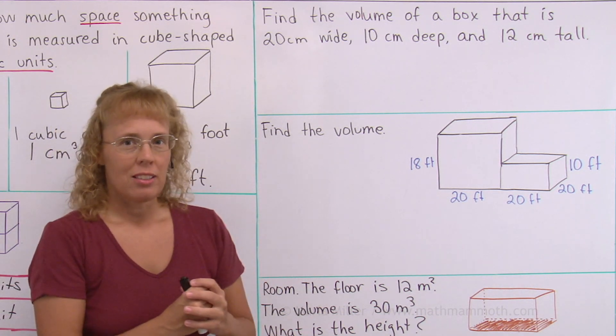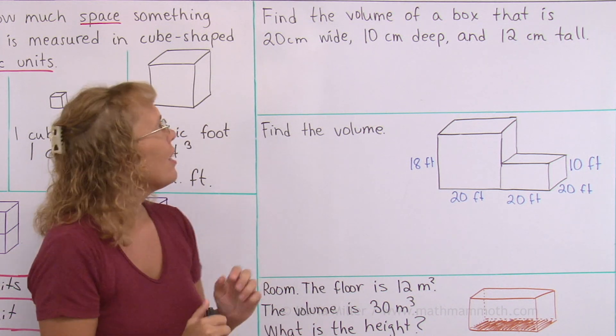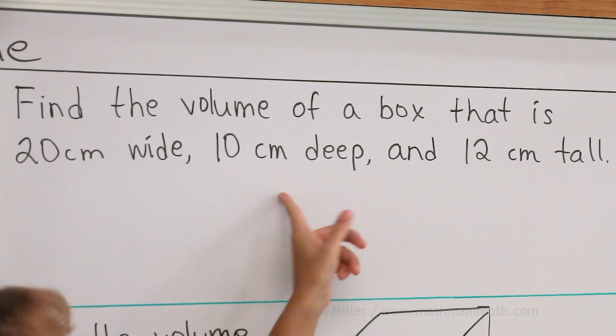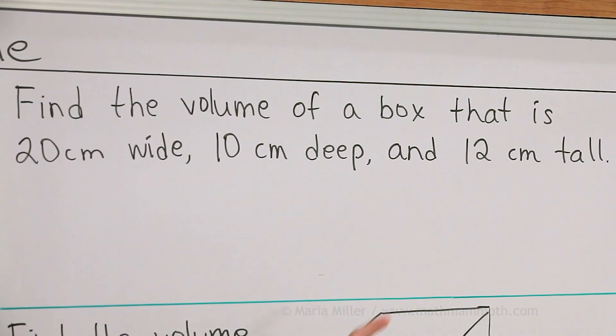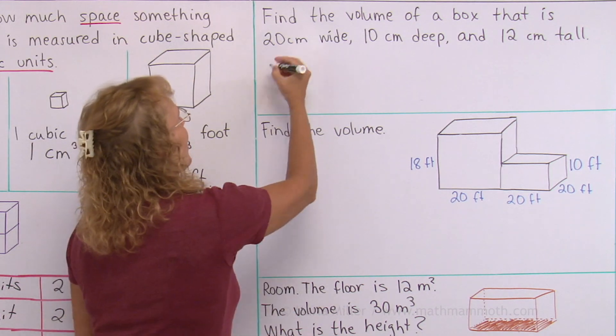You can imagine in your mind little cubic centimeters, little cubes, that would be 20 times 10 in the bottom row and then 12 layers high. And let's write it this way.